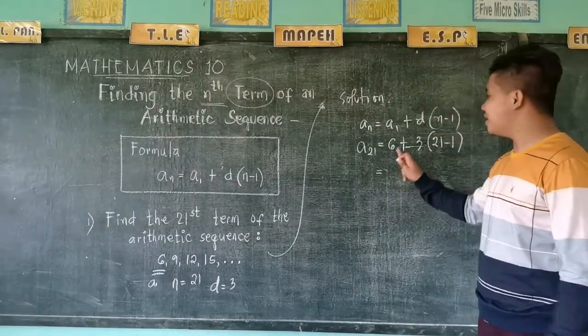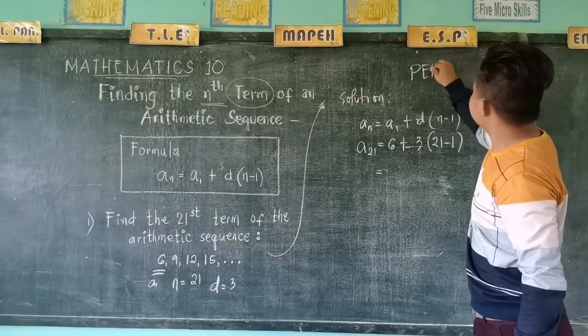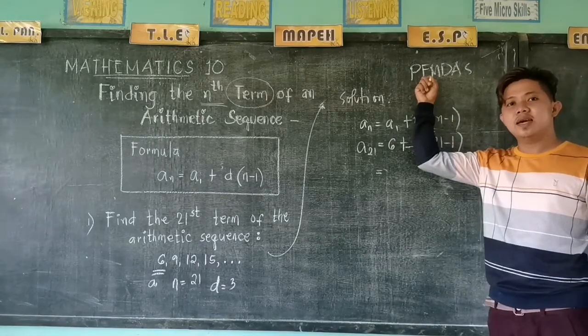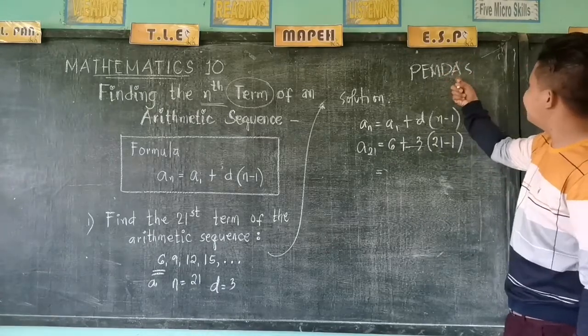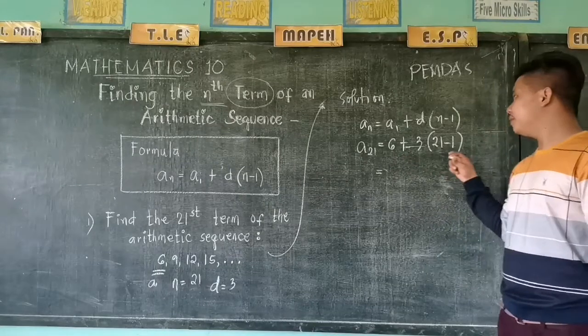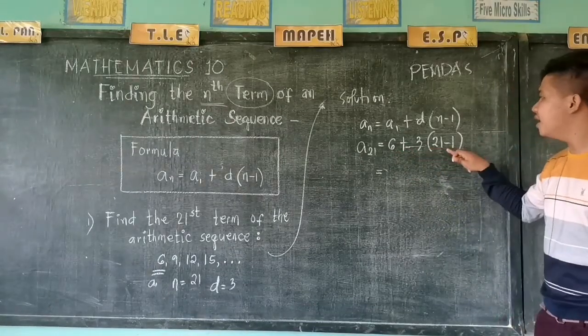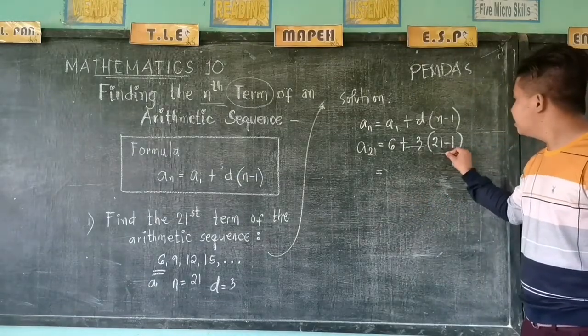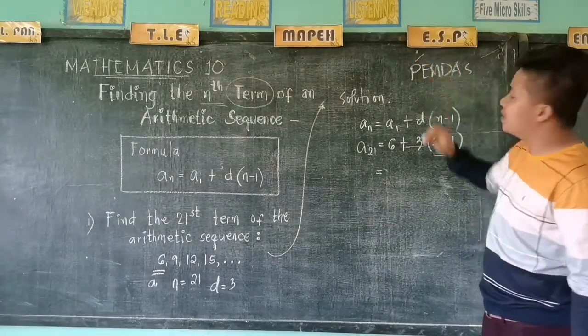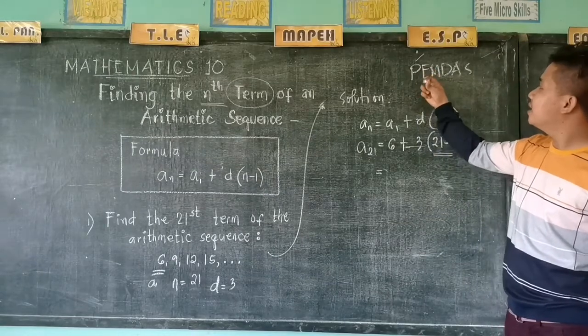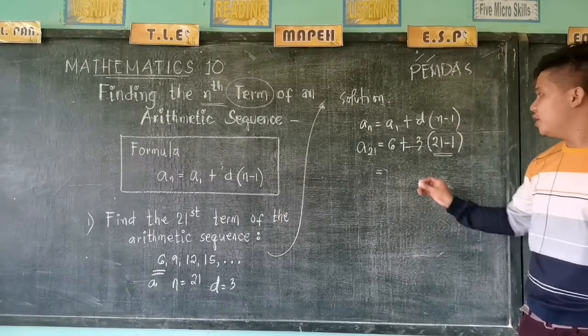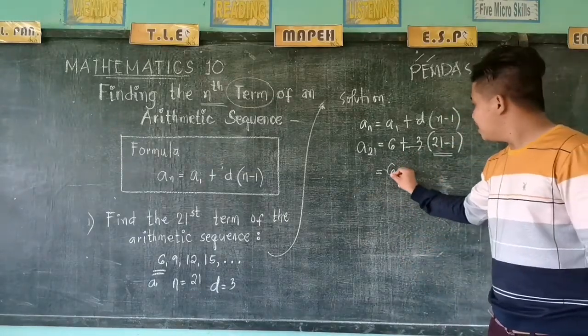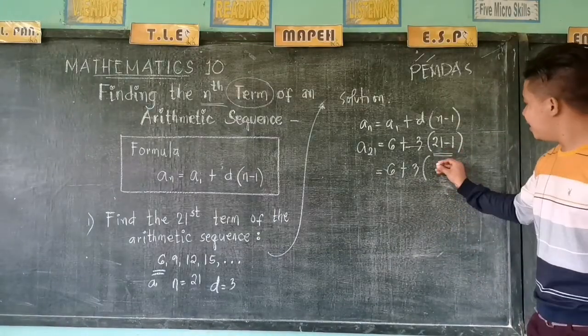Can you add 6 and 3? Remember PEMDAS. P stands for parenthesis, E is exponent, then M multiplication, D division, A addition, and S subtraction. In here, we have addition, multiplication, and then subtraction, but in parenthesis. So therefore, we need to solve first 21 minus 1, because that is P, parenthesis. We will not add 6 and 3; it will bring you to the wrong answer. So we have 6 plus 3, and 21 minus 1 is 20.